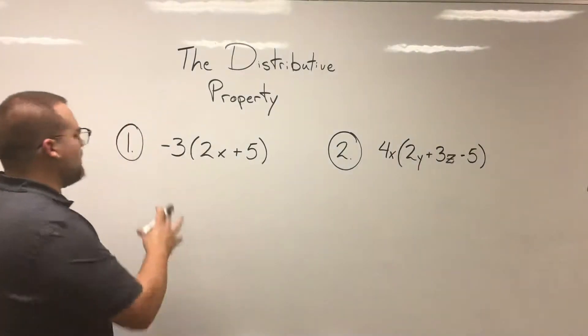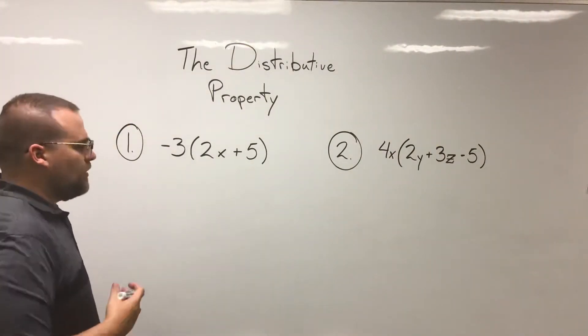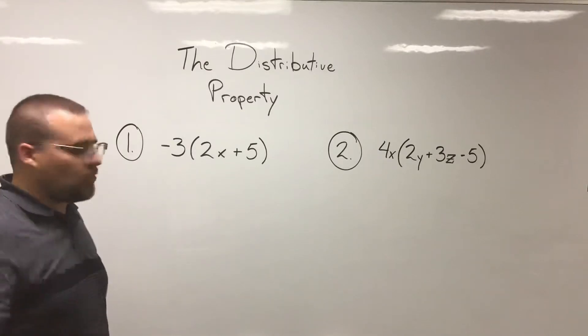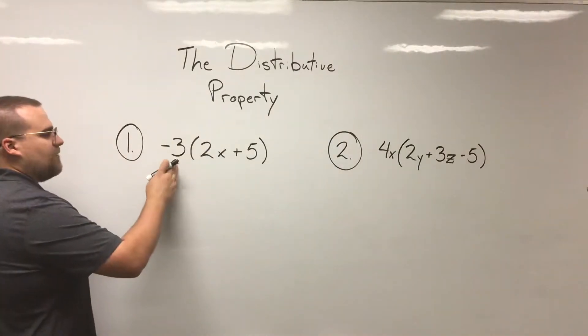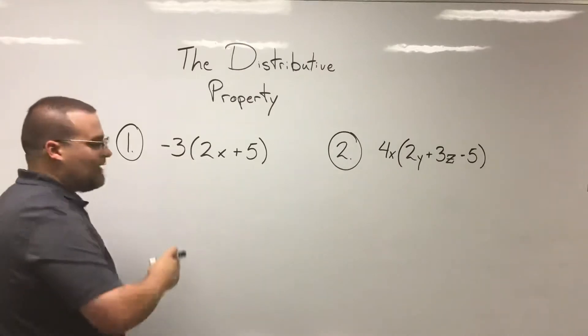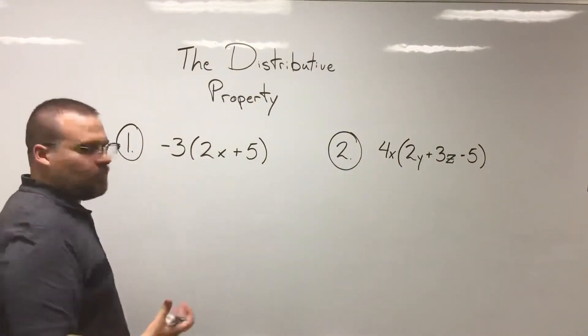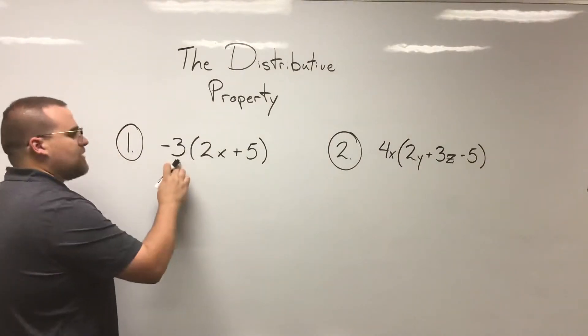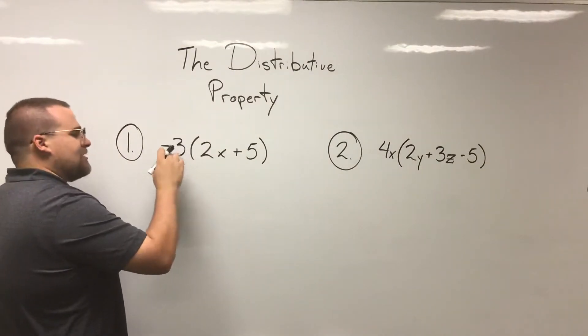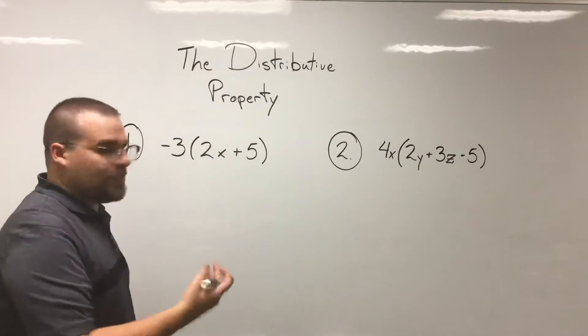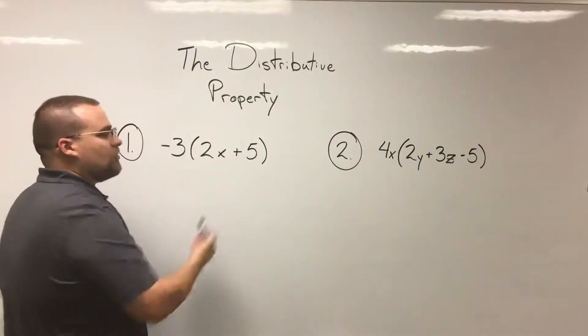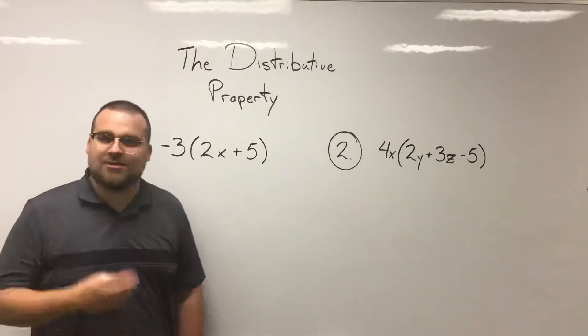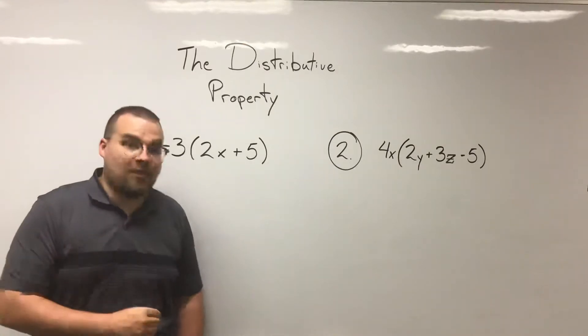Let's take a look at number one here. As you recall, the distributive property states that whenever we have a number outside, or a term - whatever it may be, variable, not variable - on the outside of a set of parentheses, it can distribute or multiply into all of the terms inside of the set of parentheses that it is outside of.